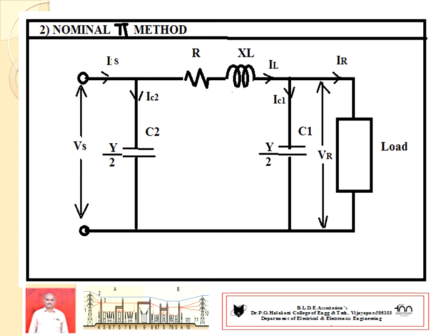After knowing IL, you calculate VS as VR plus IL times Z, where Z equals R plus XL. Once VS is known, this voltage is available across capacitance C2. Knowing the capacitive susceptance and VS, you calculate IC2. Once IC2 is found, knowing IL you can find IS. These are all preliminary calculations derived from the equivalent circuit diagram.